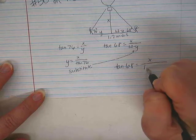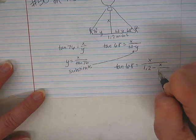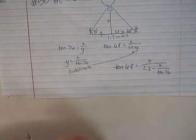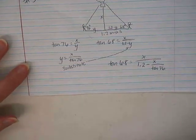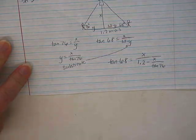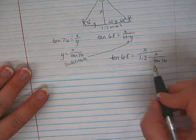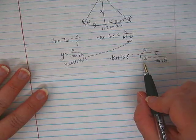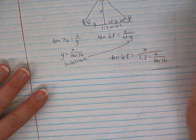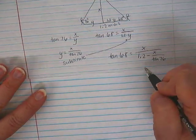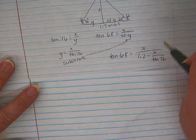So that gives us tangent 68 equals X over 1.2 minus X over tangent 76. I don't know if I've made this problem harder than it should be, but this is kind of an ugly problem. We'll just keep going. So I guess I want to get a common denominator here probably. So 1.2 tangent 76 over tangent 76, don't you think?